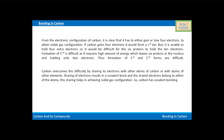Carbon overcomes this difficulty by sharing its electrons with other atoms of carbon or with atoms of other elements. Sharing of electrons results in a covalent bond, and the shared electrons belong to either of the atoms. This sharing helps in achieving noble gas configuration, so carbon has covalent bonding.